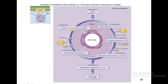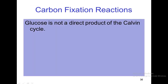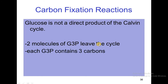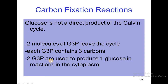When this ribulose 1,5-bisphosphate is resynthesized, it again reacts with carbon dioxide to start another round of the cycle. Glucose is not a direct product of the Calvin cycle because 2 molecules of glyceraldehyde 3-phosphate leave the cycle, and each glyceraldehyde 3-phosphate contains 3 carbons.